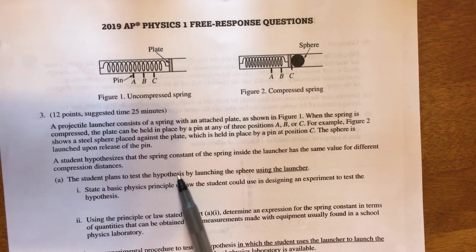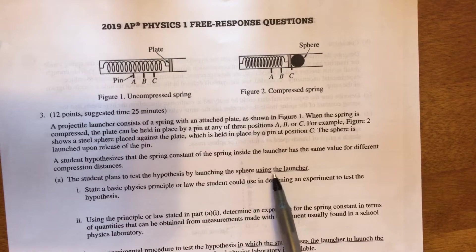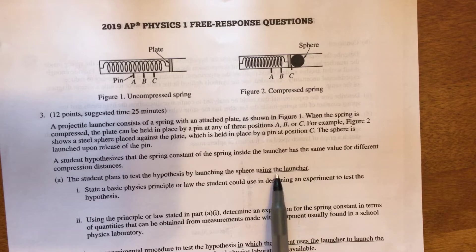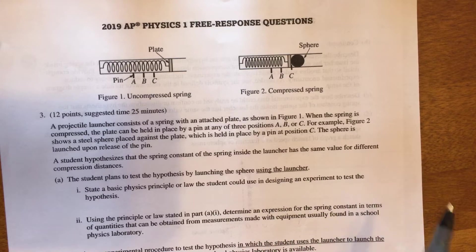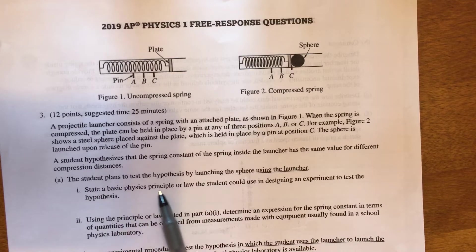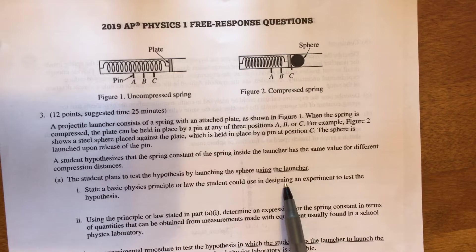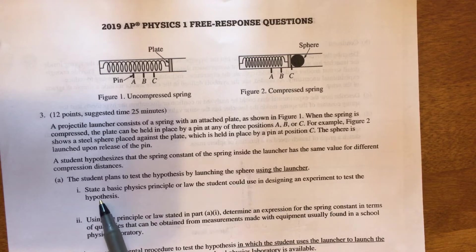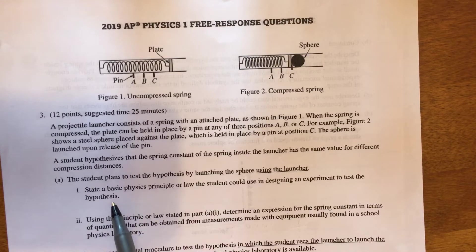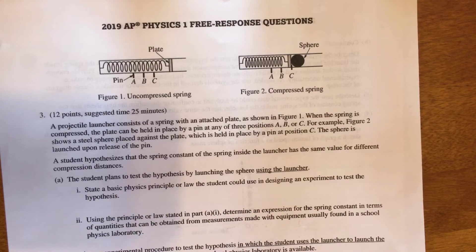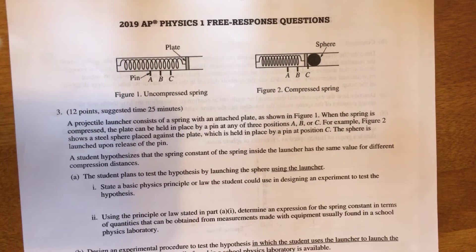The student plans to test the hypothesis by launching the sphere using the launcher. So when we design our experiment, it has to have the launcher being used. And the first thing we want to do is state a basic physics principle or law the student could use in designing an experiment to test the hypothesis. Please make sure you're always answering the question that's being asked. Here, we're not designing the experiment. We're just talking about what basic principle that experiment would have to be designed around.